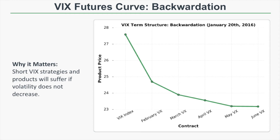Now let's look at the VIX futures curve when it's in backwardation — where the curve is downward sloping. In this example, the VIX index is around 27.50, the February VIX future is around 24.75, the March VIX future is around 24, and all the way out to June the VIX future is around 23. So current implied volatility is around 27.50 while the longer-term June VIX future is around 23 — this is a downward sloping, or backwardation, VIX term structure.